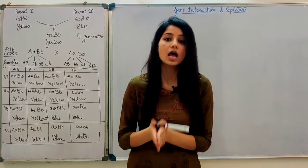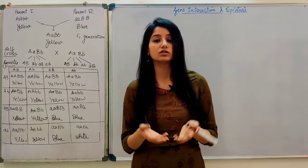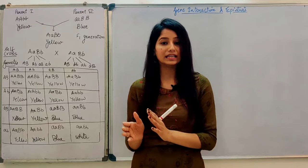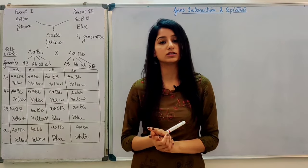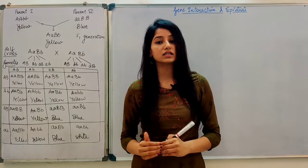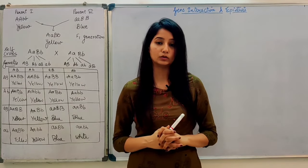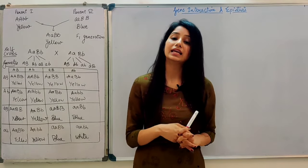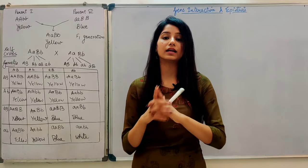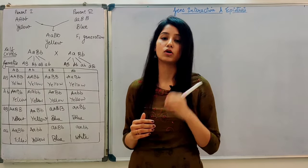Similarly, if we look at color, just one gene was responsible — yellow and green, just one gene was responsible. So if we look at each characteristic, only one gene is responsible for each characteristic. But in actuality, it doesn't happen that way. In actuality, there is more than one gene responsible.